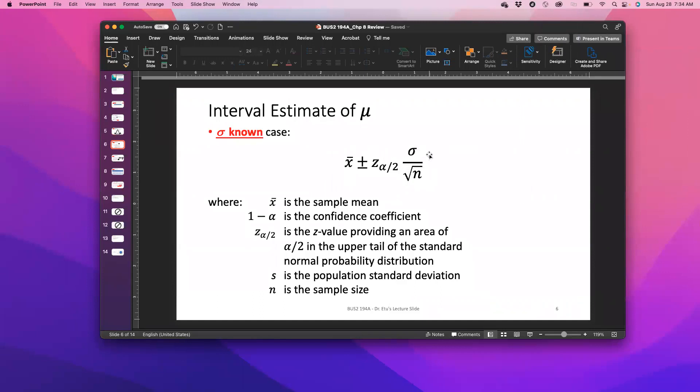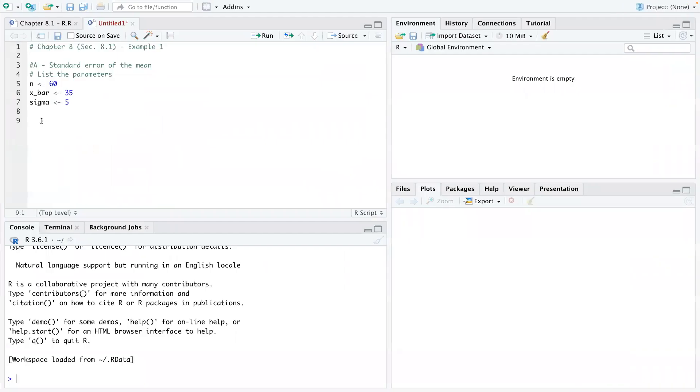So sigma over square root of N here. This is the standard error, sigma over square root of N. So please take note of that. So we'll just write it out here. We write square root as sqrt and then just put N inside there. Then you just call out the standard error again. So let's run it.